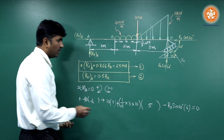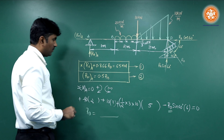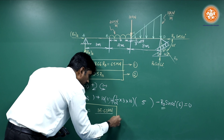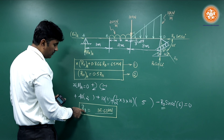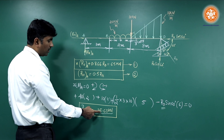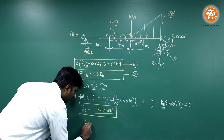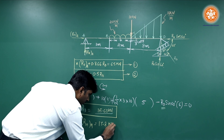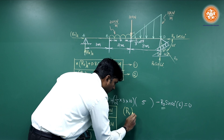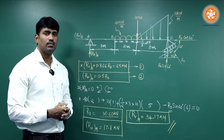From the moment equation the only unknown is Rd. On simplification, Rd equals 35.60 kilo Newton. Substituting Rd back into Equation 2: horizontal reaction at A equals 35.60 times 0.5 equals 17.8 kilo Newton. Substituting Rd into Equation 1 gives the vertical reaction at A equals 34.17 kilo Newton. This completes the problem.